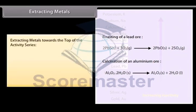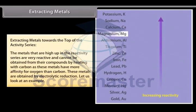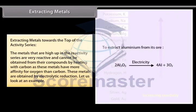Extracting Metals towards the top of the activity series. The metals that are high up in the reactivity series are very reactive and cannot be obtained from their compounds by heating with carbon as these metals have more affinity for oxygen than carbon. These metals are obtained by electrolytic reduction.